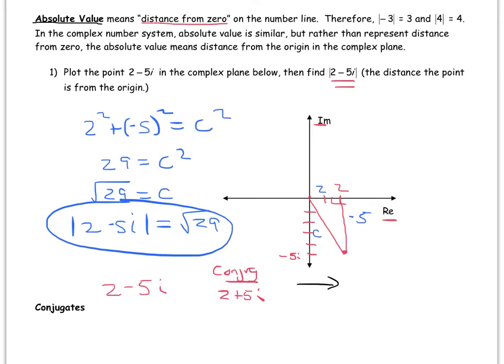If I do 2 minus 5i times 2 plus 5i, then I get—